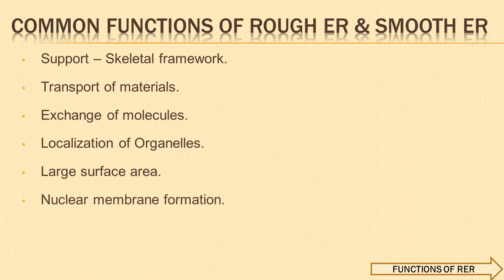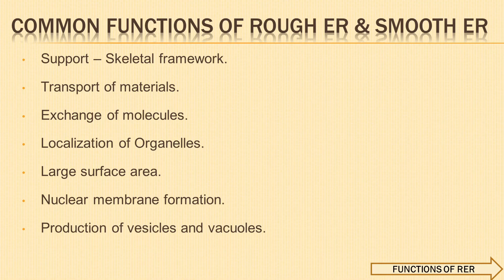Endoplasmic reticulum provides large surface area for rapid synthesis of biochemicals and cellular reactions. It also helps in the formation of nuclear membrane during cell division, and provides membranes to Golgi bodies for the production of vesicles and Golgian vacuoles. Golgian vacuoles are large, spacious, rounded, sac-like structures occurring at the distal end of cisternae, produced by vesiculation of the sacculus of cisternae.